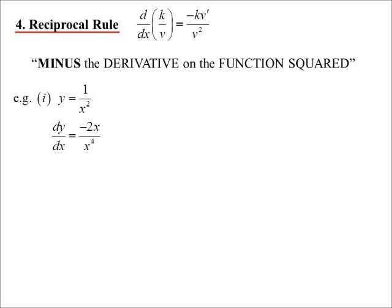So people say, well, minus the derivative of what? Well, it has to be of the bottom of the fraction, because we're using this situation when there's a constant on the top. And if I differentiated a constant, I'd get 0. So when I say minus the derivative, derivative of x squared is 2x, so minus the derivative. On the function squared, x to the power of 4, x's cancel, minus 2 on x cubed. So minus the derivative on the function squared.